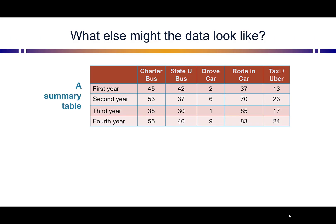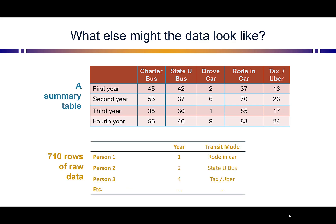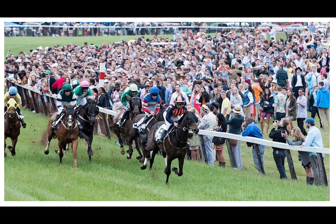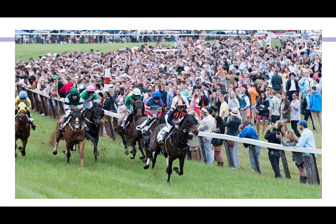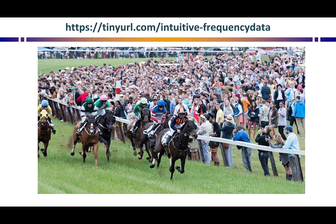What could this data look like? We've already seen it as a summary table, but the raw data itself would have 710 rows, one for each person, listing both their year and their transit mode. The data could come to you in either of those forms. If you go to the URL at the top, it has the data I showed you the summary table for, so you can use your own statistics package and follow along. I'm going to go to Minitab and show you how to run a chi-square test.